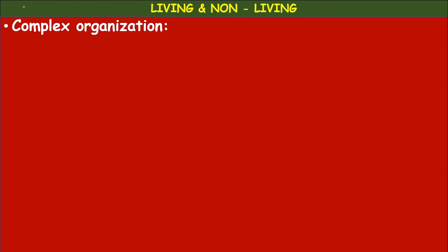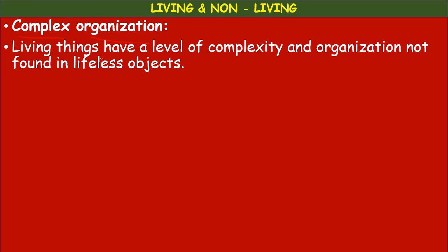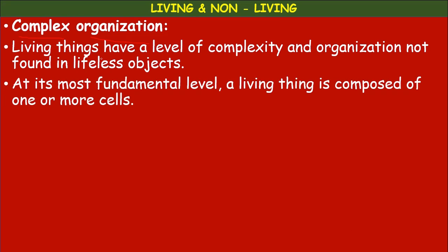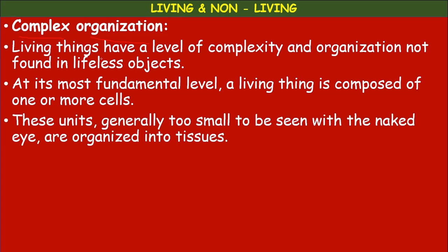Complex organization — the name itself indicates this feature. Living things have a level of complexity and organization not found in non-living things. At its most fundamental level, a living thing is composed of one or more cells. The beginning of a living organism starts with a single cell. These units are too small to be seen with the naked eye.